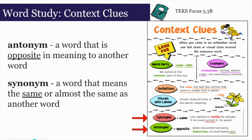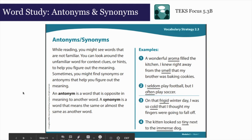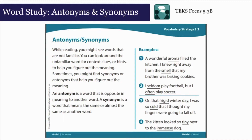While reading, you might see words that are unfamiliar, but as good readers we have to use clues to help us determine the meaning of the word. Let's look at the first sentence: 'A wonderful aroma filled the kitchen. I knew right away from the smell that my brother was baking cookies.' I noticed in the sentence it says an aroma filled the kitchen, and then I knew right away from the smell. Aroma and smell must mean the same thing — they are synonyms.